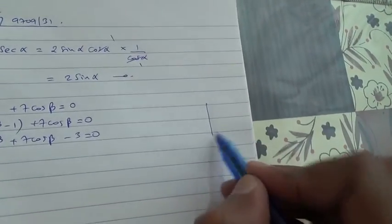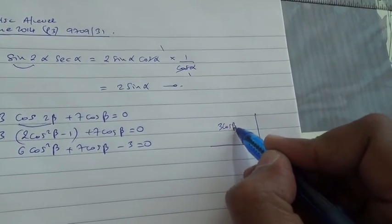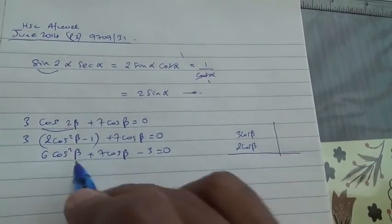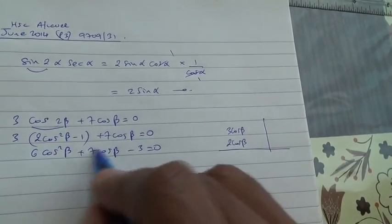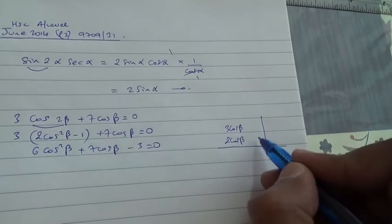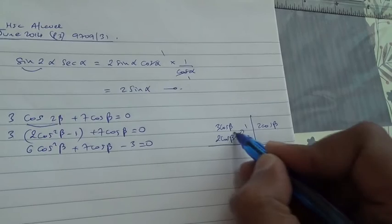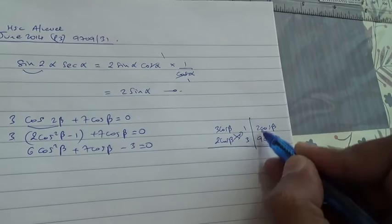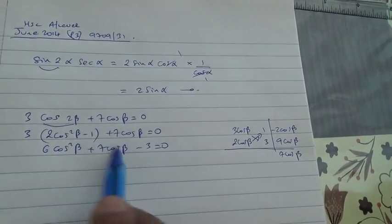So you just need to factorize. You have 6, and how can you get 6? 3 cos of beta times 2 cos of beta, 3 times 2 is 6 cos square beta. Alright, so now we need to get 7 in the middle, and there's 3 here, so maybe we can put 3 here and 1 here. 1 times 2 cos beta is 2 cos beta, 3 times 3 cos beta is 9 cos of beta. 9 minus 2 is going to give us 7 cos of beta, and here we are, 7 cos of beta.